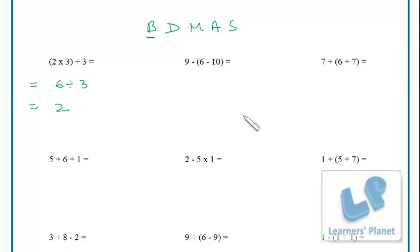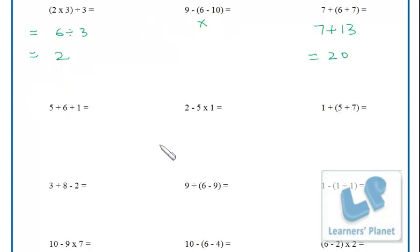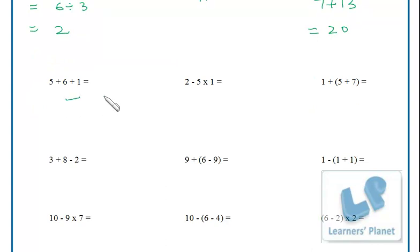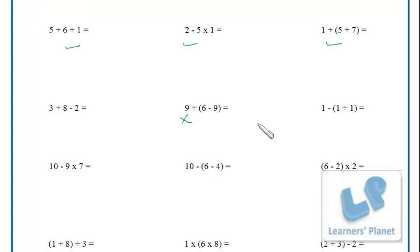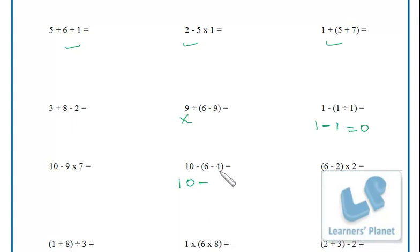Next, inside the bracket: 6 + 7 = 13, then 13 + 7 = 20. Then 1 − 1 ÷ 1 = 1, and 1 − 1 = 0. Next: 10 minus the bracket (6 − 4) = 10 − 2 = 8.